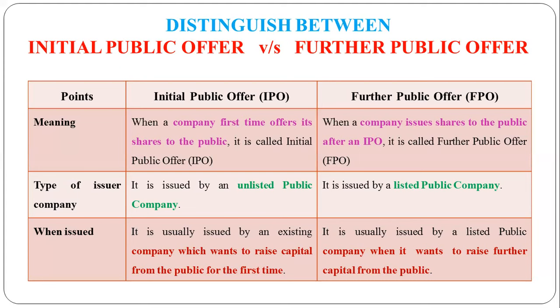In 2012, the company issued shares via FPO. Then in 2018, the company again issued shares via FPO. So a company can issue multiple FPOs after its initial IPO whenever it needs additional capital, such as for expansion.